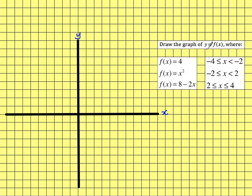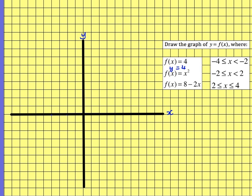Draw the graph of y equals f(x) where f(x) equals 4. We'll think of this as y equals 4, and we're going to graph it for values from minus 4 to 2. So minus 4 along to 2 — we're going to see the graph of y equals 4, which is a horizontal line across like so.